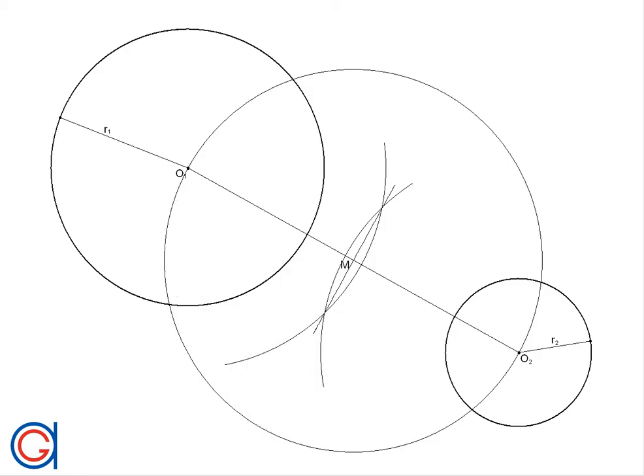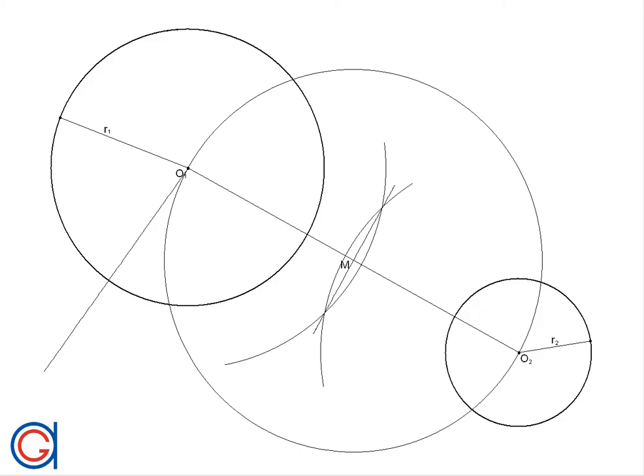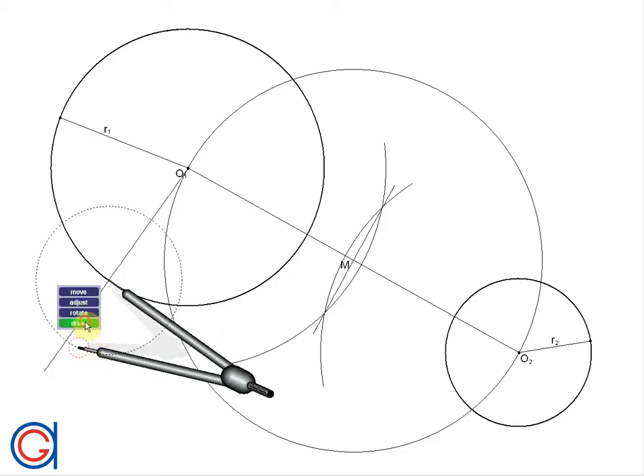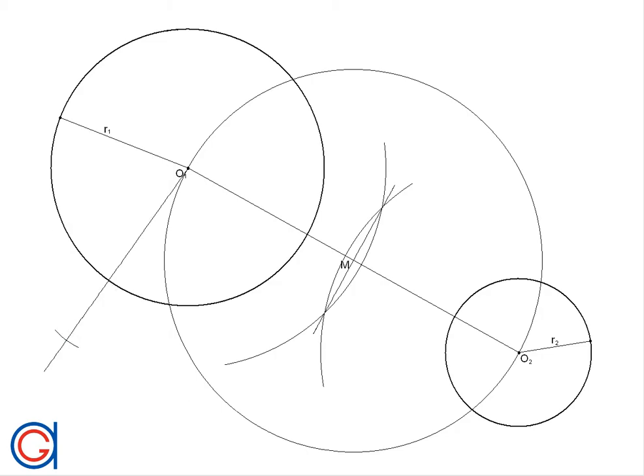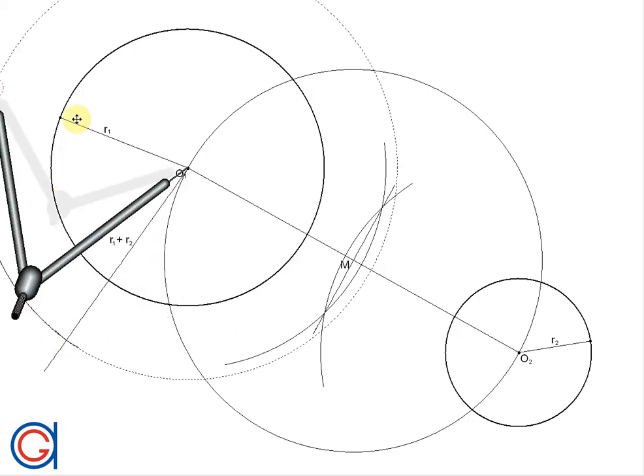So next we are going to add radius R1 to radius R2. But before we do this we are going to draw a ray from point O1 at any angle and this ray must be longer than the addition of these two radii as can be seen here. So now setting our compass to the length of radius R2, we are going to transport it to the intersection point of the ray with the circle. And where it cuts the ray is going to be our new radius R1 plus R2. So now setting our compass on O1 and radius R1 plus R2 we will draw another external circle as shown here.